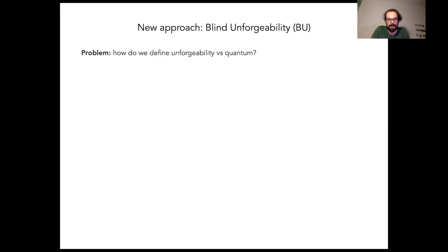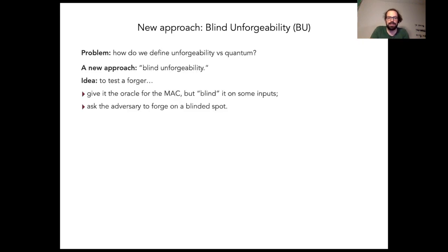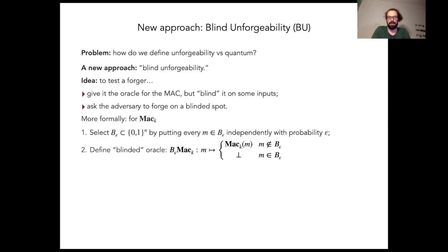How does it work? The idea is as follows. Instead of providing an adversary with a proper oracle for the MAC function, we provide them with a modified oracle that is blinded in a certain random subset of the inputs. Afterwards, we ask the adversary to forge in one of the blinded spots.